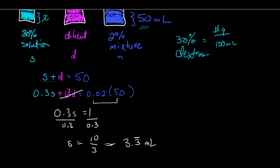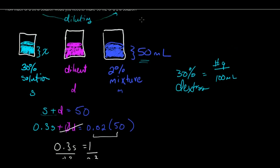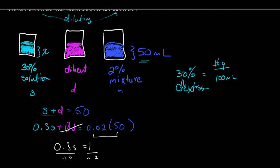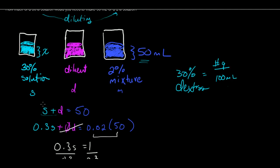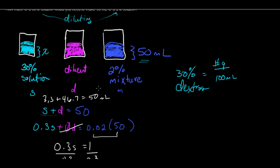That means that I would use 3.3 milliliters of the 30% solution plus 46.7 milliliters of the diluent. So this would be 3.3 milliliters and I would add to that 46.7 milliliters of the diluent and that would give me the 50 milliliters of the diluted dextrose solution.